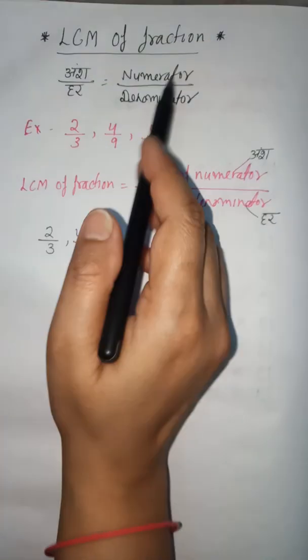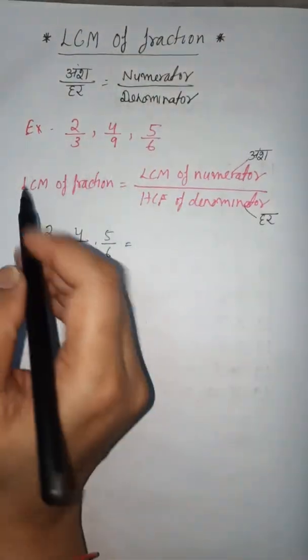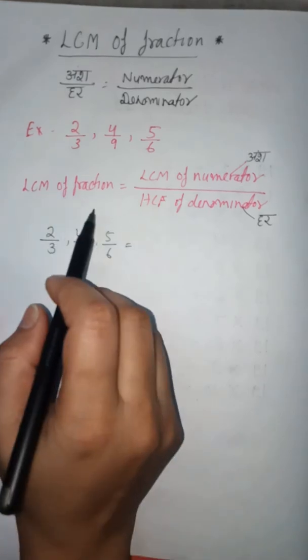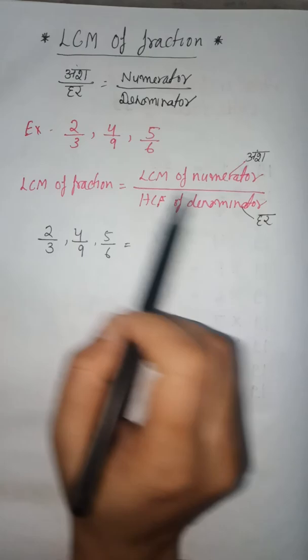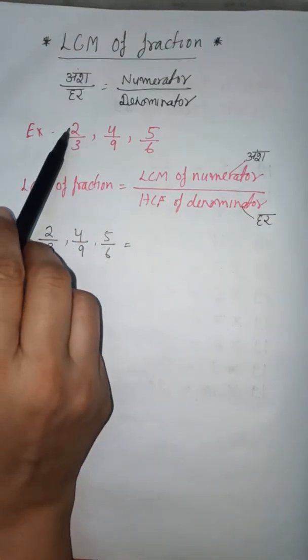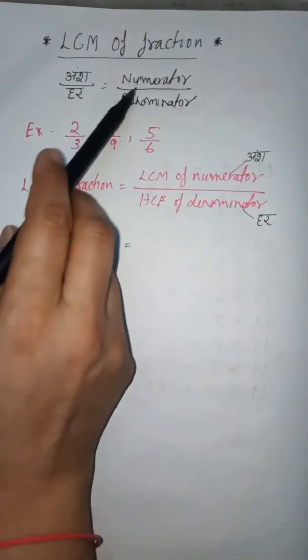To find out the LCM of a fraction, we need to follow this structure: LCM of fraction equals LCM of numerator divided by HCF of denominator. So upar wala is your numerator, neache wala is your denominator.